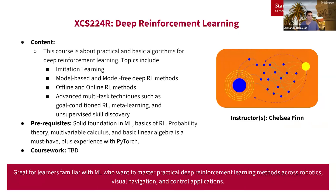Next we have XCS 224R, Deep Reinforcement Learning. This is great for learners who want to get familiar with ML to practice deep reinforcement learning methods across robotics, visual navigation, and control applications. Topics include imitation learning, model-free and model-based deep RL methods, and offline and online RL methods — giving you a solid comprehension of the basic RL algorithms in the field. Prerequisites include a solid foundation in probability theory, multivariable calculus, and basic linear algebra, and experience with PyTorch is encouraged. At the time of filming, assignments are still being developed — check the syllabus linked in the resources doc at the end of the video.